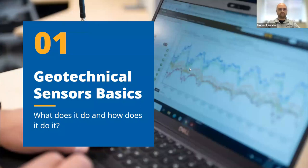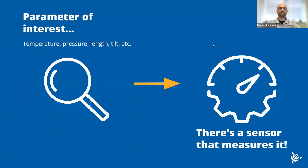We will be starting with geotechnical sensor basics — what they do and how they do it. During a monitoring project, many parameters like pressure, temperature, tilt, and other factors help us better understand the behavior and displacement in the monitoring project. For each of these parameters, we have a sensor that can measure it.